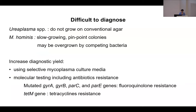These infections are difficult to diagnose for several reasons. They're difficult to culture — ureaplasma does not grow on conventional agar media, and mycoplasma hominis is slow-growing with very pinpoint, subtle colonies that may be overgrown by competing bacteria. Diagnostic yield can be increased by using selective mycoplasma or ureaplasma culture media, or by doing PCR testing, which can also provide information about antibiotic resistance.